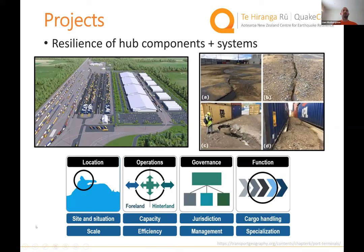Another key focus is hub components and systems within those hubs. Thinking about a transport network, we've got inland hubs and ports — critical pieces of functionality. Within those locations there are many different components and systems. CentrePort is a key example of an impacted hub with significant work done in QuakeCore — looking at where they are, what their operations are, and linking their function to improve resilience and inform the wider system.